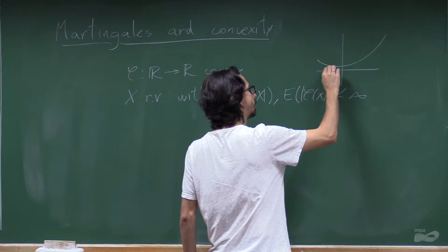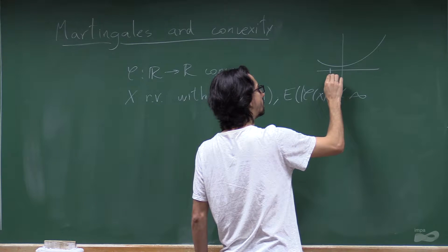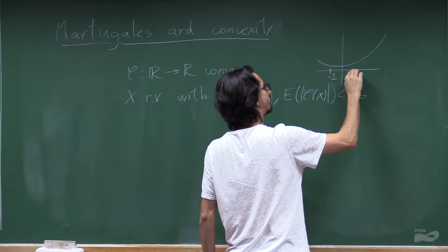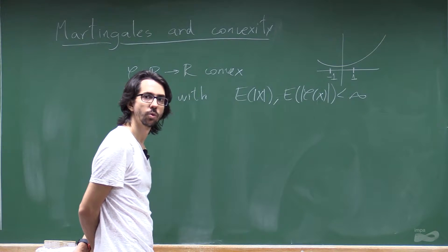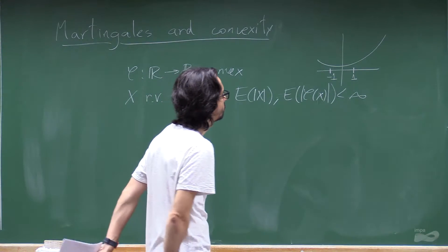So just to give an example, imagine that x is equal to minus 1 or 1 with probability 1 half, for example.